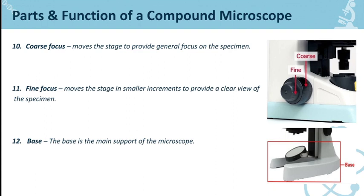Number eleven is the fine focus. It moves the stage in smaller increments to provide a clearer view of the specimen. Same as the coarse focus knob, itong fine focus knob ay nag-mo-move din ng stage pero in smaller increments lang para mas makikita natin yung mismong specimen or the object or the tiny organisms na we put into the microscope or in the stage of the compound microscope.